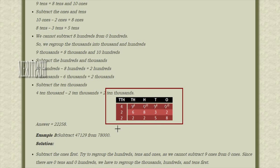So 8 minus 6 is 2. So this is the number 4. 4 minus 2 is 2. After subtracting these 2 numbers, we get an answer of 22,258.